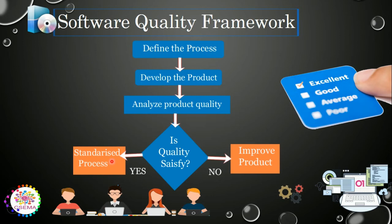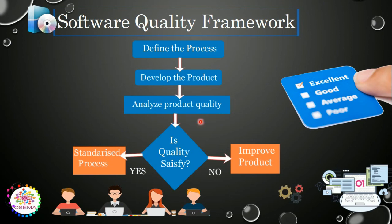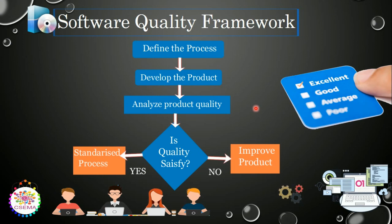We can define software quality management in three ways. First, we need to define the process to be used and monitor all the processes and activities performed during the development of the system. When the product is developed — the product being the system or software developed by the development team — the team analyzes the quality of the product. If the quality satisfies the user requirements, it is standardized; if not, the operation is performed again: define the process, develop the product, and analyze the quality. This works like iterations, and after satisfying the user requirements we have an excellent and good software system.